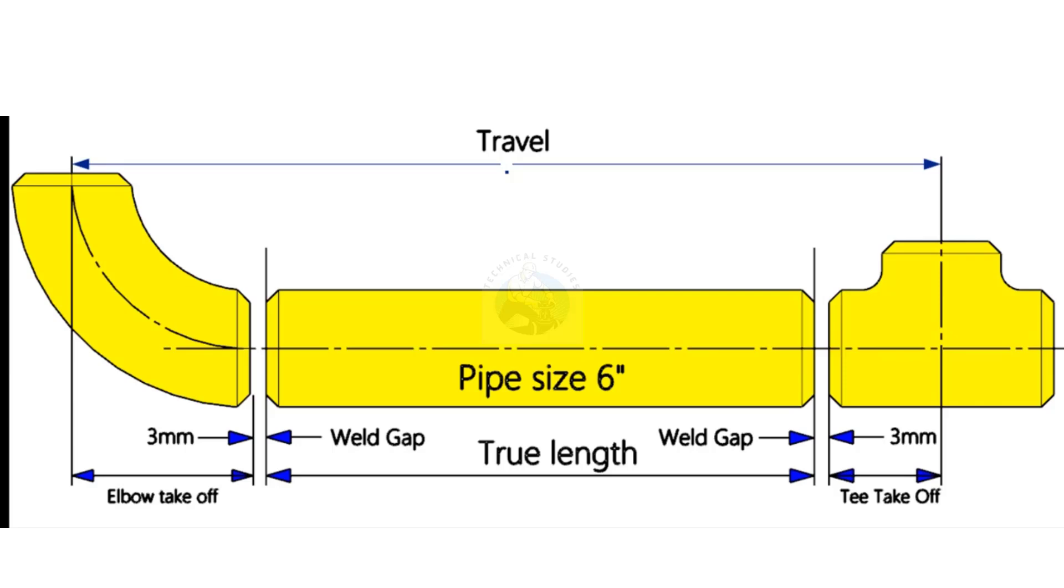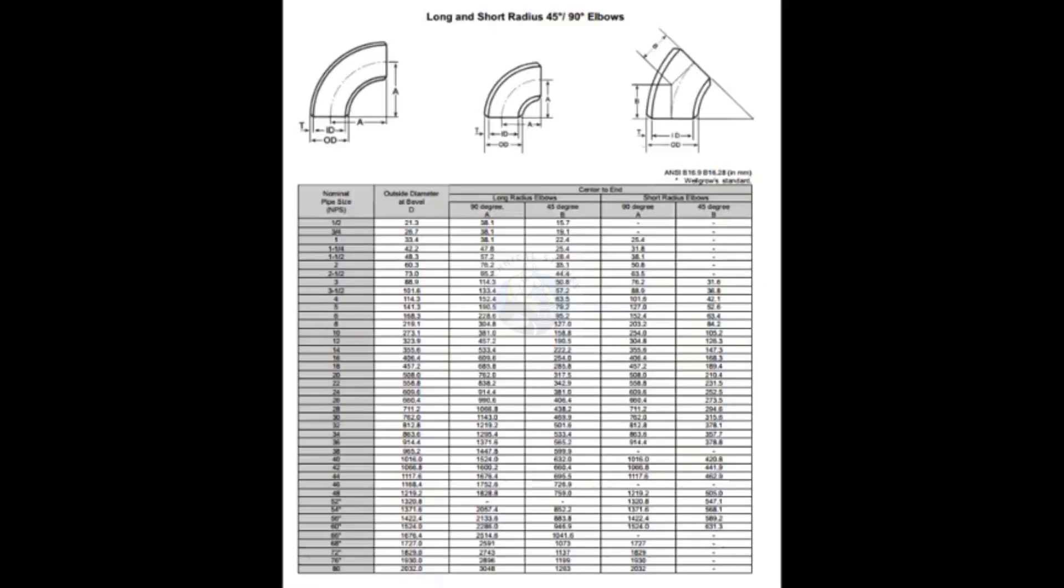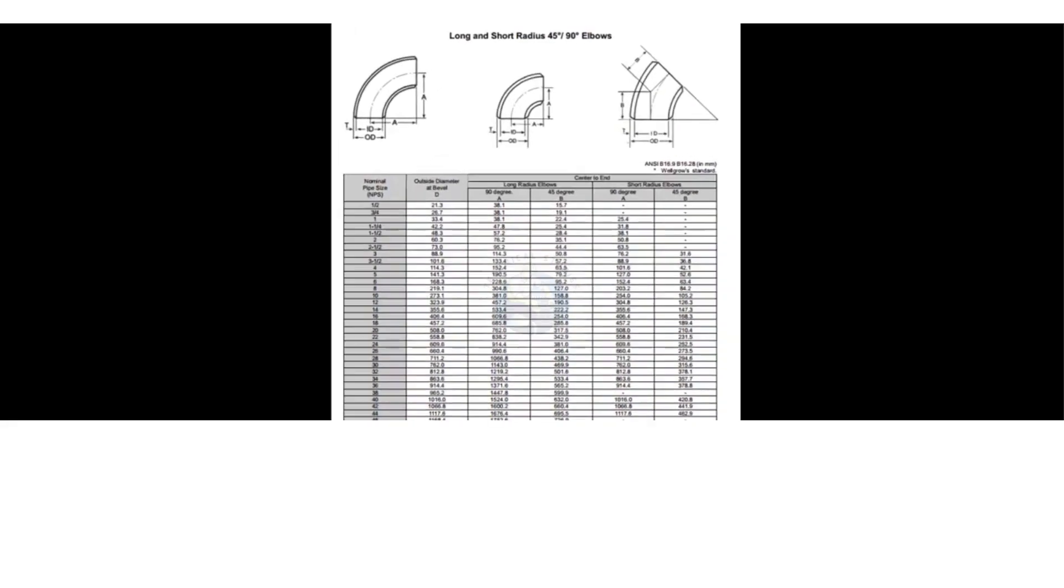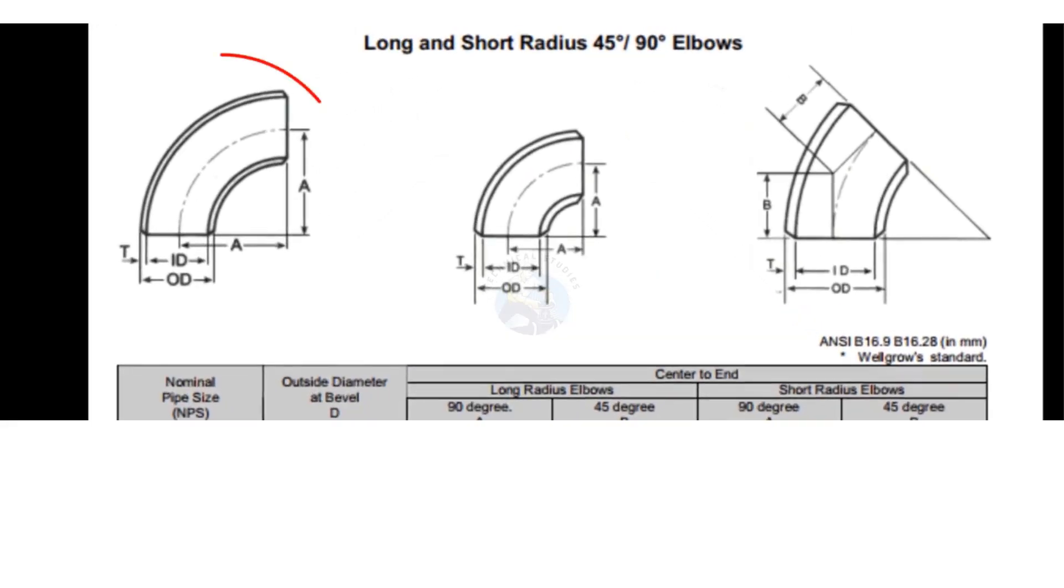If the fittings are available, we can measure the takeoff physically. If you don't have the fittings, you need a pipe fittings dimensional chart like this one. Since the size of our pipe is six inches and is long radius, let us check the elbow center or the takeoff length. Check the value of A.